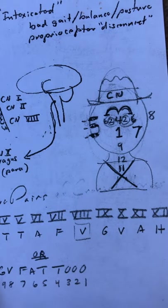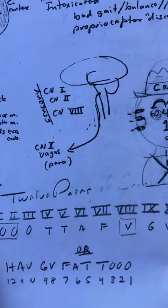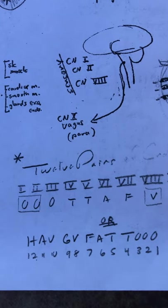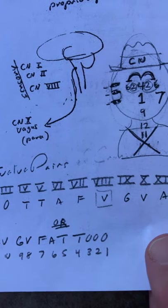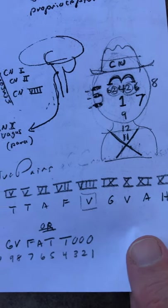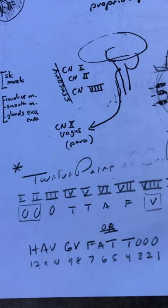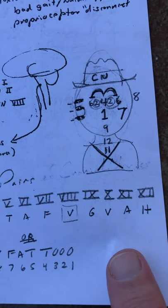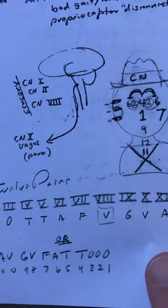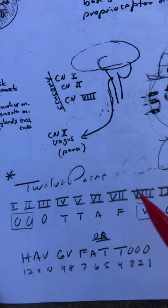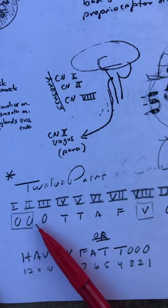And here is a series of ways you can do it. One way is to just go ahead and come up with some kind of a mnemonic, such as OOOTTAFVGVAH, which doesn't mean anything, unless you turn it into a sentence like, our only opportunity to tell a few very good verses about hope or heaven.